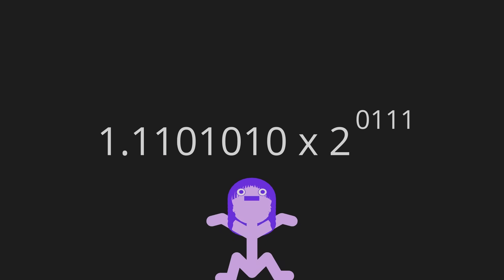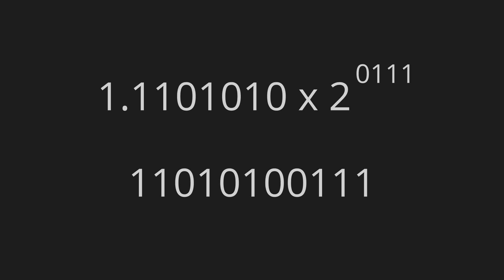Behold, a float. Well, okay, if we're being pedantic, this is not actually a float — the computer still just gets a string of zeros and ones. But the point is that those zeros and ones can be split into one whole number representing the decimal part of the significand, and another whole number representing the exponent. So by exploiting scientific notation, we can trick a computer into storing decimals, even though it only ever sees whole numbers.